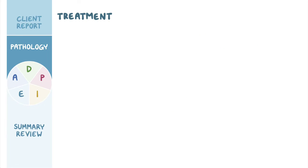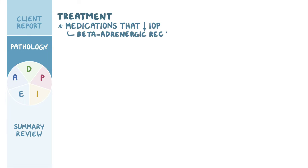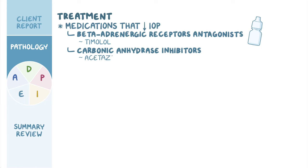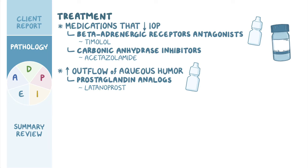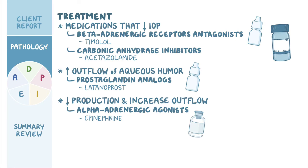Treatment focuses on medications that decrease the intraocular pressure. We can decrease the production of aqueous humor with medications such as beta-adrenergic receptor antagonists like timolol and carbonic anhydrase inhibitors like acetazolamide. We can increase the outflow of aqueous humor with prostaglandin analogs such as latanoprost. Finally, we can decrease production and increase outflow with alpha-adrenergic agonists such as epinephrine.